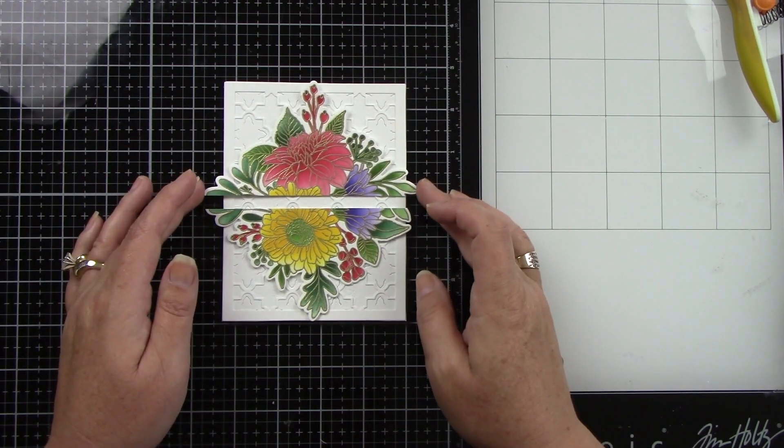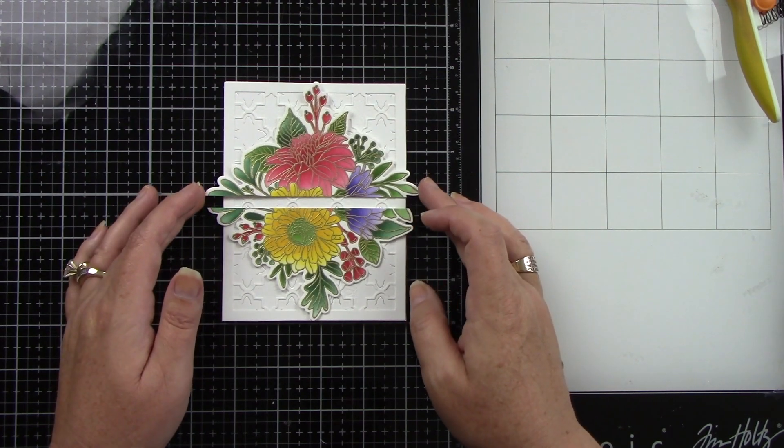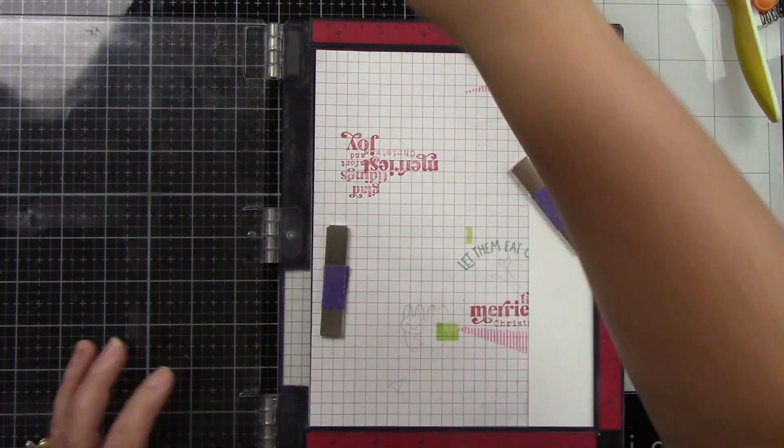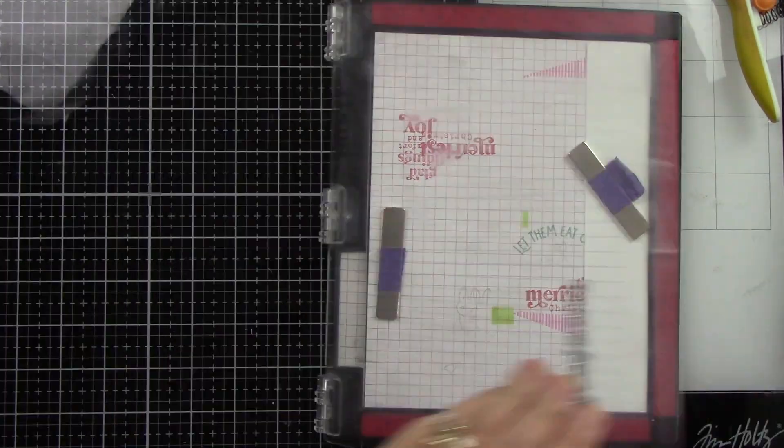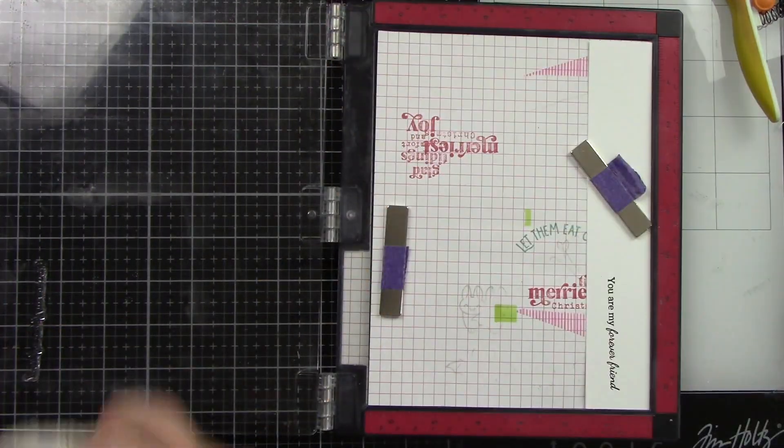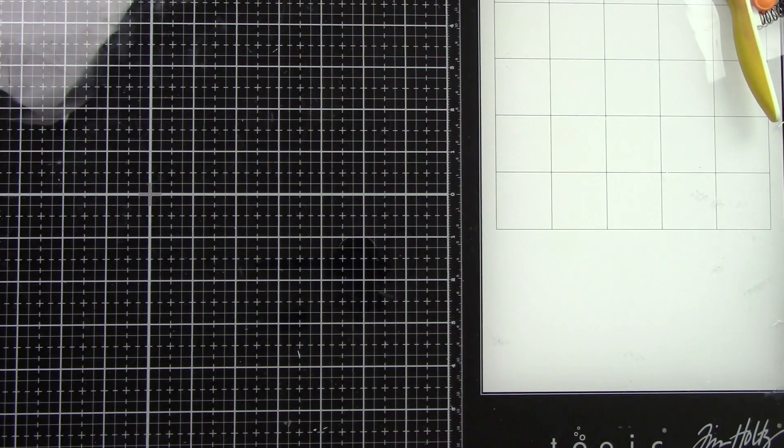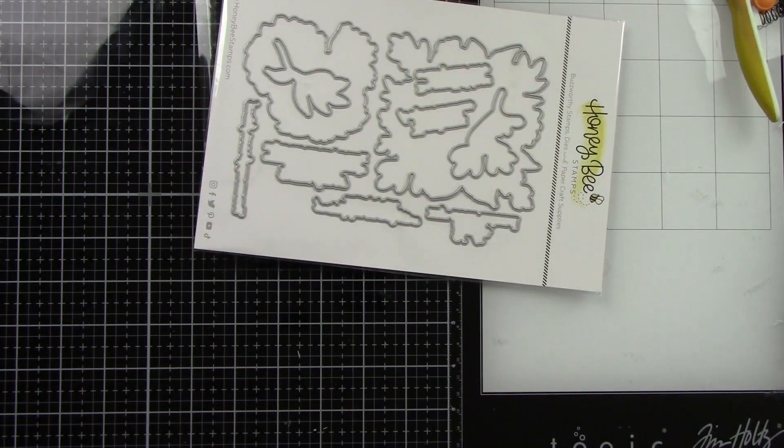Something I thought about after this card was completed was to have maybe added a gold mirror or gold glitter cardstock in that strip to put the sentiment on top of. Here's the sentiment. I'm just stamping in black ink because I do want that to pop off. I thought the gold embossing would probably get lost in this image right in the center.